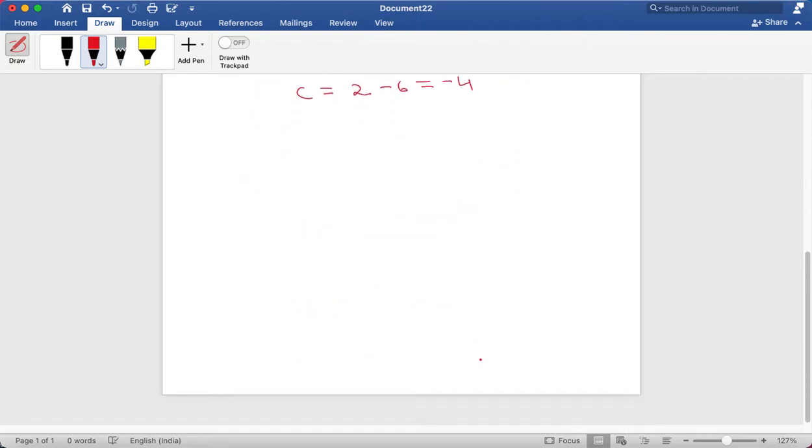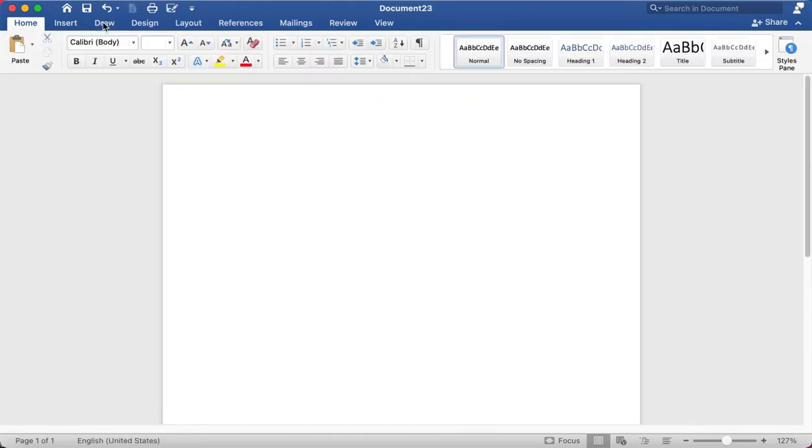So now if we move on to another question, we have f of 3 equals minus 2 and it's a linear function again and f of 4 is equal to minus 4 and in this case we have to find the x-intercept of the graph. So 3 comma minus 2 is one point and the other point is 4 comma minus 4.